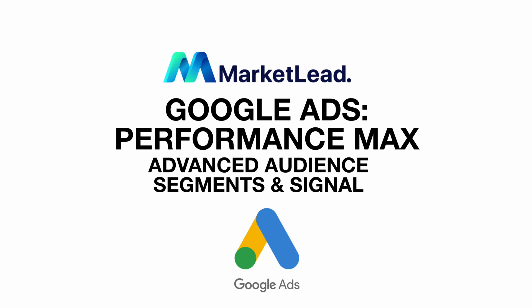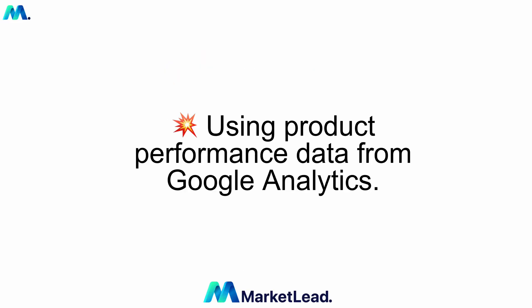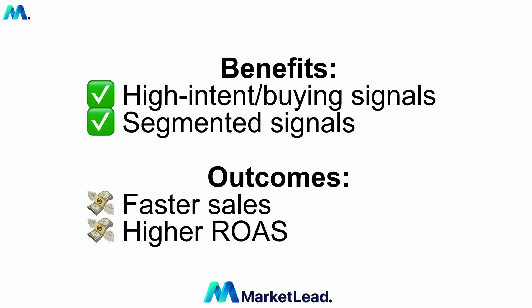Hi, I'm Michael Nadelin from Market Lead, and today I'm going to take you through an amazing and advanced segment and signal strategy that will get you faster sales and a higher ROAS immediately. This will be using product performance data from Google Analytics, so you know that data is available in your analytics — and we're actually finally using it for something. The benefits are you'll be able to create high intent and buying signals.